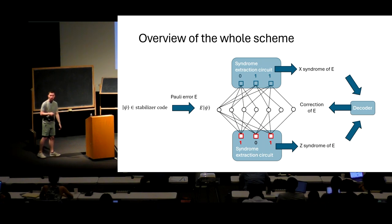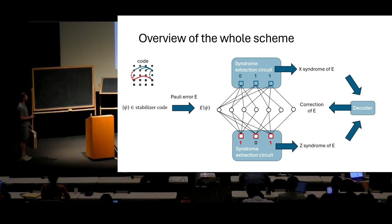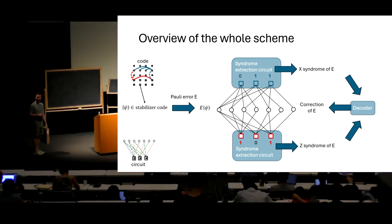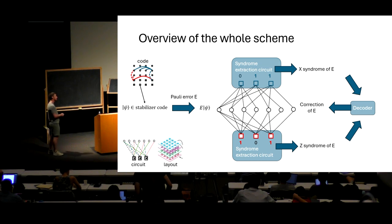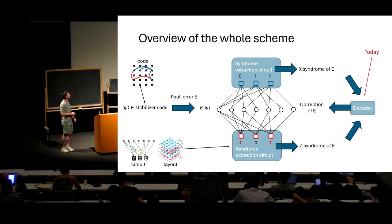Then we need a decoder. The decoder takes as input the syndrome and outputs a correction that we apply back to our qubits — this is a whole loop. We have the code, we are using hypergraph product codes, we have a syndrome extraction circuit, and we even discussed how to lay it out — a theoretical proposal that doesn't exist yet. What we are going to do today is build this decoder.